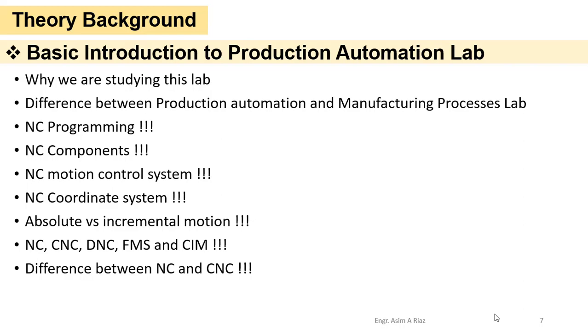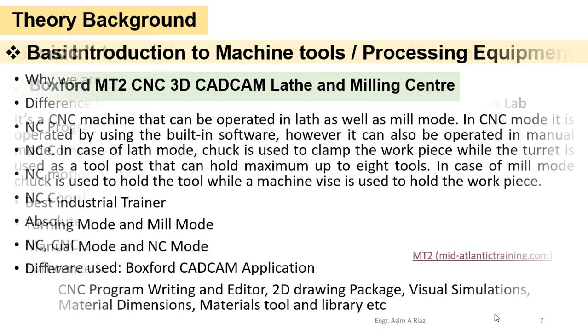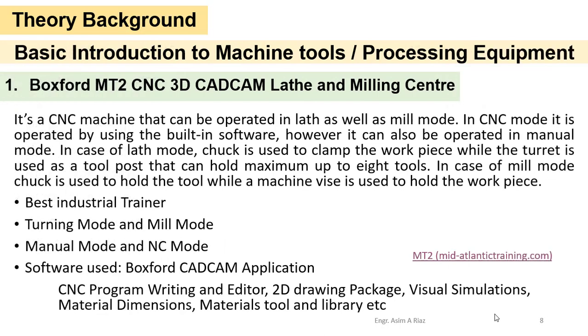CIM stands for Computer Integrated Manufacturing, now commonly referred to as Industry 4.0. It is the advanced form of FMS. When market management functions are integrated with FMS, it gives a full package called Computer Integrated Manufacturing. This was the basic theory background for the production automation lab.